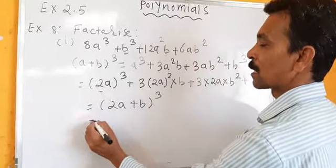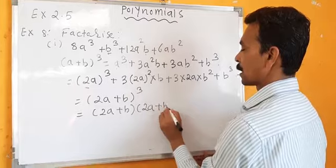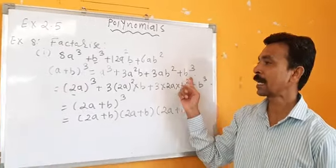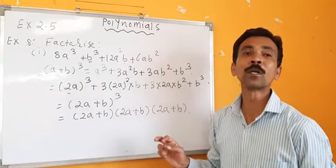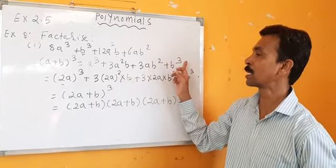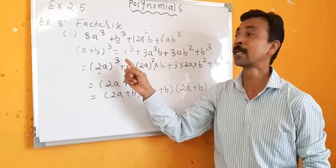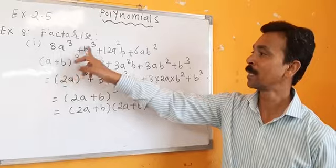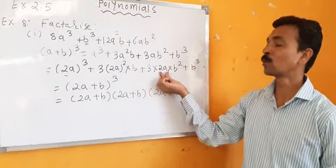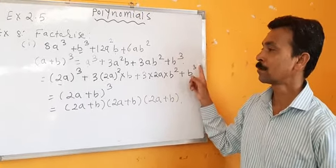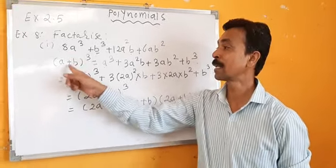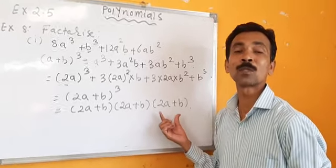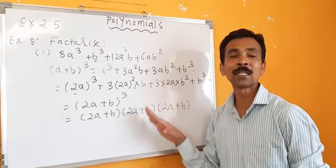So it is equal to (2a + b) whole cube. This means (2a + b) into (2a + b) into (2a + b). The expression 8a cube plus b cube plus 12a squared b plus 6ab squared is the right-hand side of A plus B whole cube. We convert it to the left-hand side: (2a + b) whole cube. If you repeat this again and again you will find it very easy.